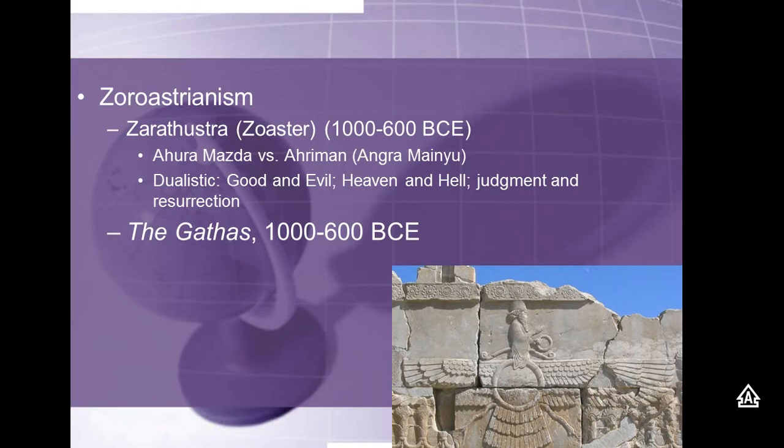The key sacred texts of this religion are the Gathas, written around 1000 to 600 BCE. The Persians used these and promoted this belief system across their empire, but they also believed in religious tolerance — tolerating Jews and other believers. This religion does not say that if you worship other gods you'll go to hell. It says if you are a liar, you'll go to hell. If you do evil things, you go to hell. So it is a little bit more tolerant than some other religions.